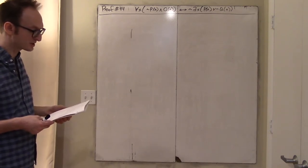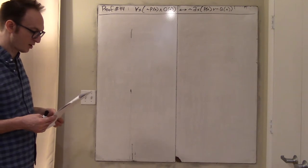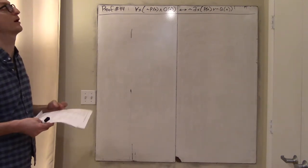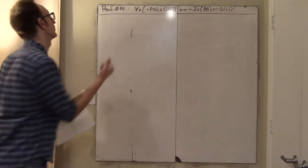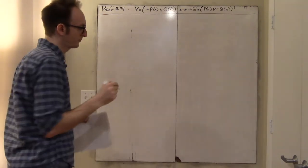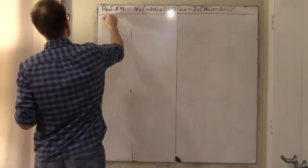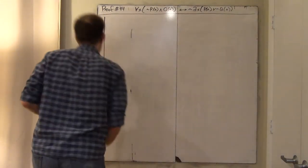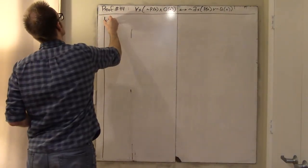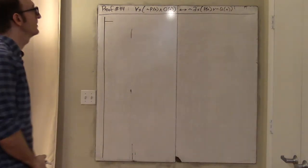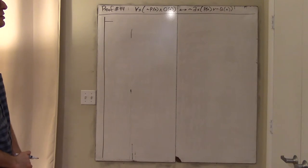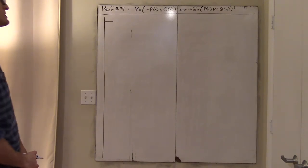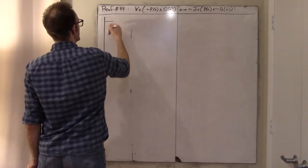This is essentially just proof 42 over again, but maybe a little bit harder. I don't think I can fit this entire proof on one board, so I might have to do half of it and then erase. That's okay because it's really two proofs — it's a biconditional, so we need to show that the left side implies the right and the right implies the left.